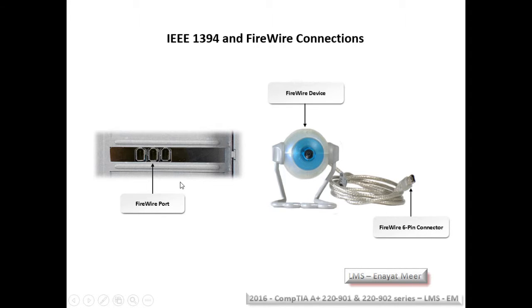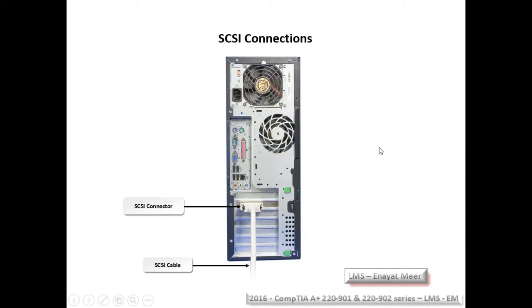IEEE 1394 can support up to 63 devices, but again, most people are moving towards USB. This is the Small Computer System Interface — SCSI. SCSI connections are used on the back of the PC, including for networking.